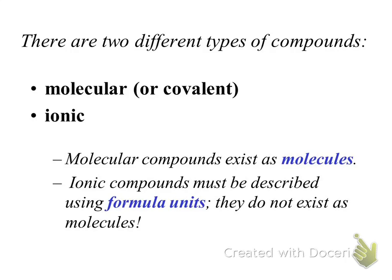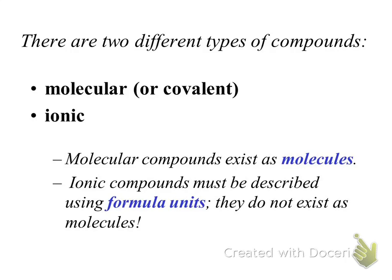Remember that logic tree that matter can either be a pure substance or a mixture? Under pure substance, it can either be an element or a compound. I would add another branch: a compound can either be a molecular compound or an ionic compound. I have one slide each to summarize what I think is the major difference between those two types of compounds.